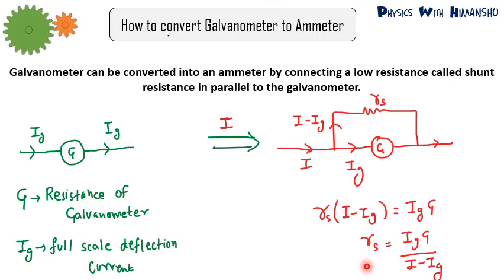And also please remember, in an ammeter the shunt resistance is connected in parallel with the galvanometer, but ammeter is connected in series in an electric circuit. So please remember this point.